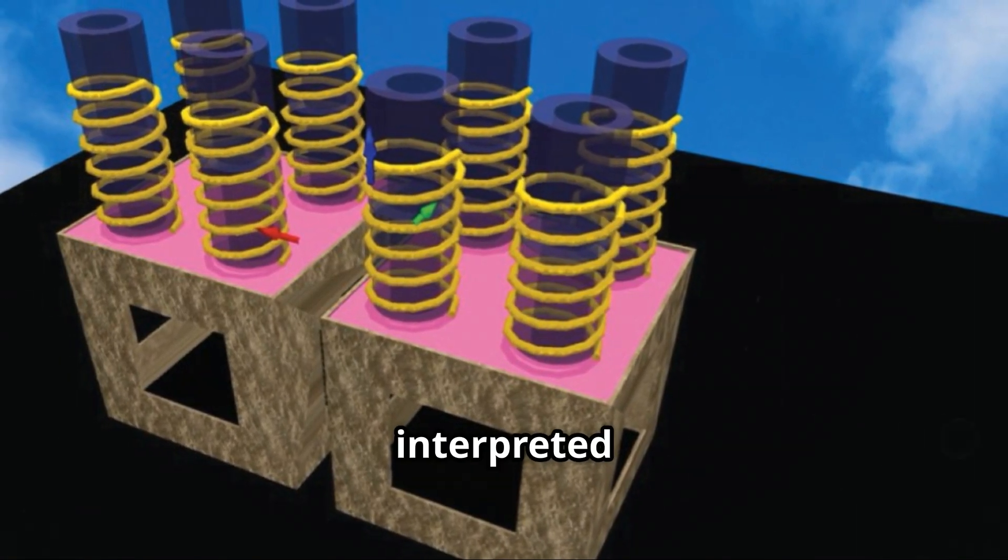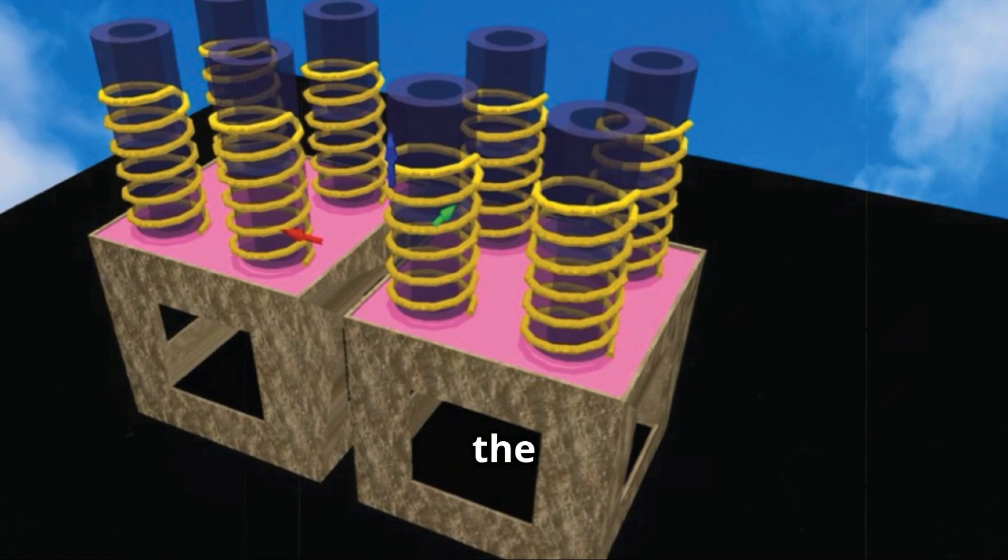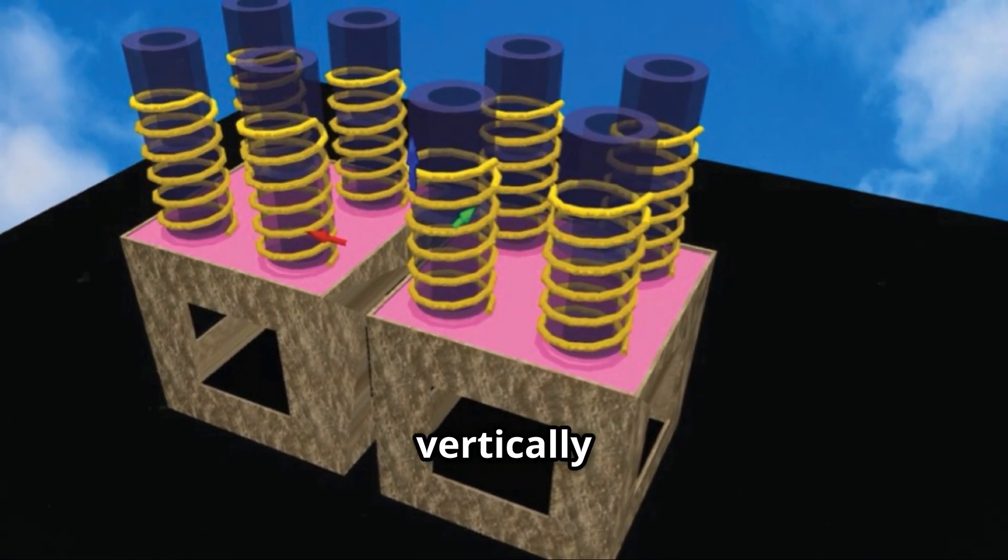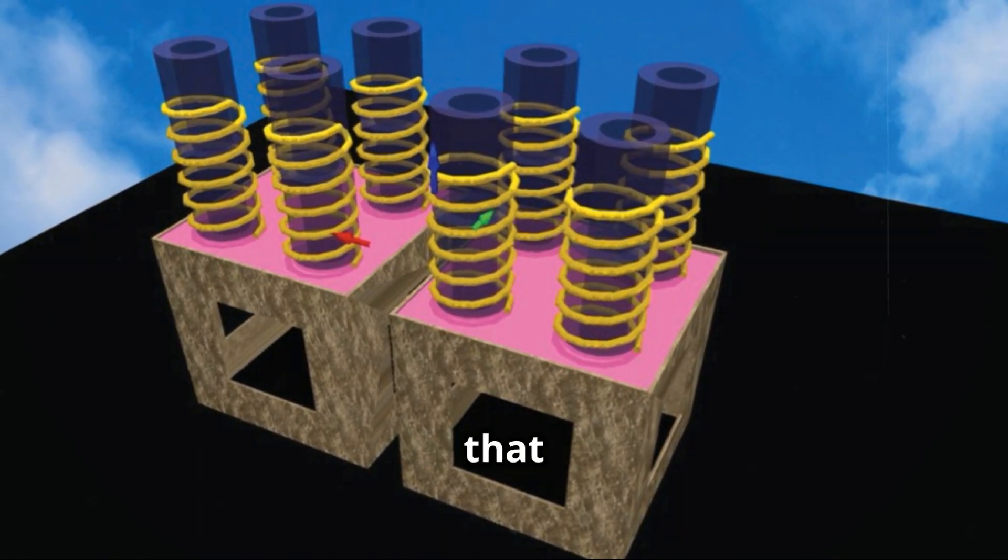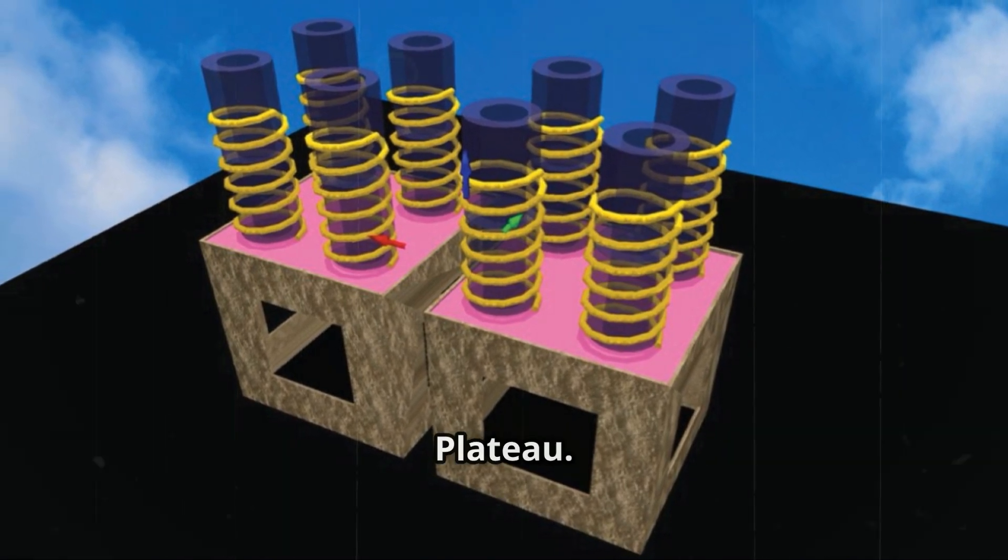The research team interpreted the raw data that below the ground level there are vertically aligned cylindrical structures that extend for hundreds of meters beneath the Giza plateau.